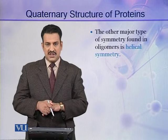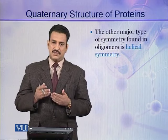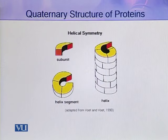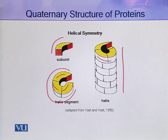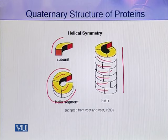The other major type of symmetry, besides rotational symmetry, is helical symmetry. In helical symmetry, the protein subunits or protomers are helically arranged. As shown in the figure, a single protomer attaches to others to form a single helix segment, and many such helix segments are arranged together. This helix exhibits helical symmetry, and this protein is at its quaternary level of organization. An example of such symmetry is found in the capsids of viruses like tobacco mosaic virus.